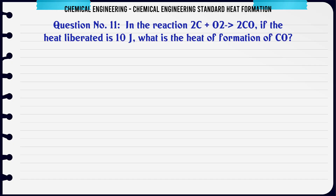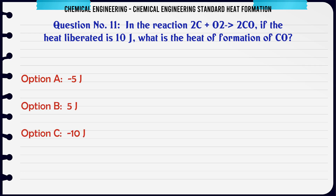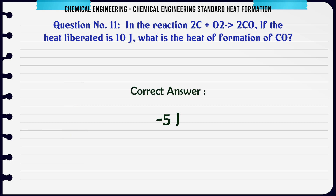In the reaction 2CO₂ → 2CO + O₂, if the heat liberated is 10J, what is the heat of formation of CO? A) 5J. B) -5J. C) 10J. D) -10J. The correct answer is -5J.